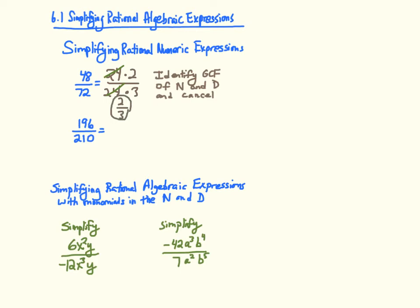The next one: 196 over 210. I can realize that I have a common factor of 14, because 196 is 14 squared and 210 is 14 times 15. So I cancel out my greatest common factor of 14 and I'm left with 14 fifteenths.